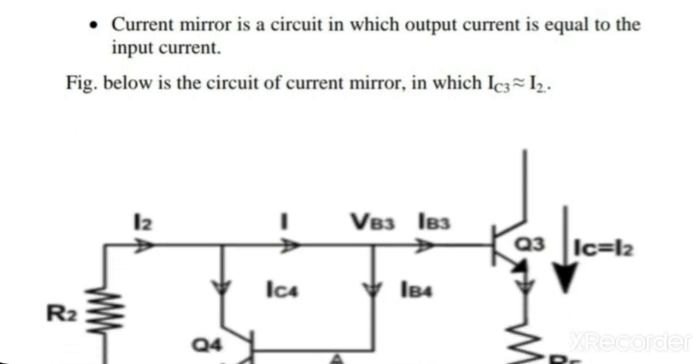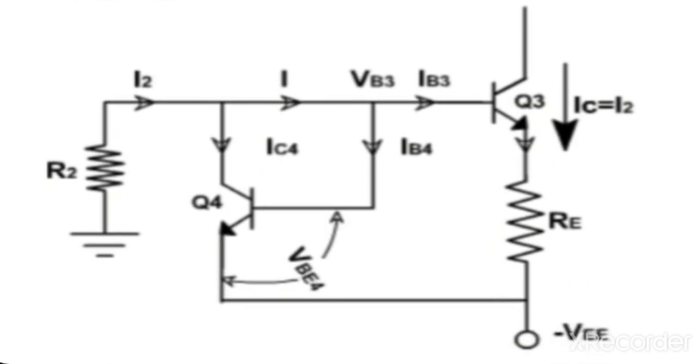The circuit diagram of current mirror is shown below. In this circuit current IC3 is equal to current I2, where I2 is the input of this current mirror and IC3 is the output of this current mirror. IC3 is the collector current of transistor Q3.